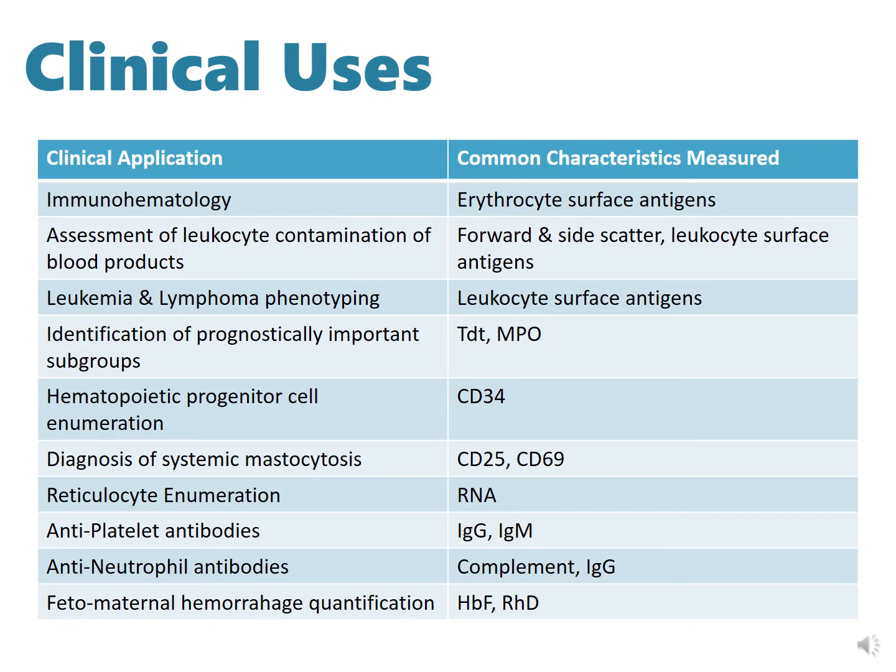Some of the immunological uses here are immunohematology, leukemia and lymphoma phenotyping, hematopoietic progenitor cell enumeration, reticulocyte enumeration, and anti-neutrophil antibodies.